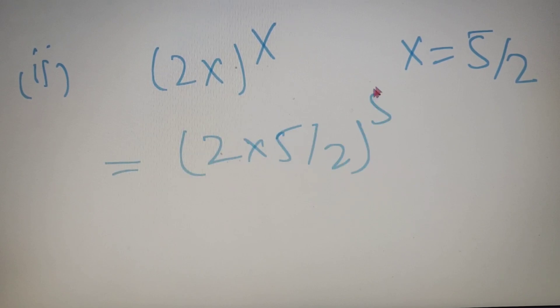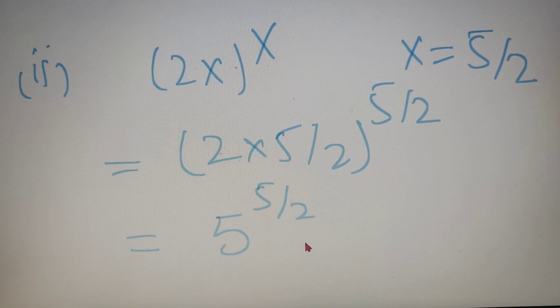Now let's solve the second part of this question. In the second part we have to find the value of 2x whole to the power x. We have just found the value of x as equal to 5 by 2. So we just put the value of x in this and we will get our answer. We will get 2 into 5 by 2 whole raised to the power 5 by 2 which is equal to 5 raised to the power 5 by 2 and upon calculation it comes out to be 25 root 5.